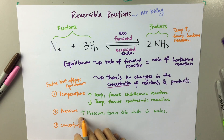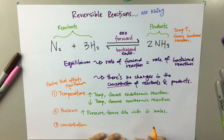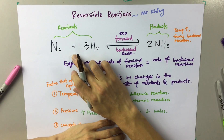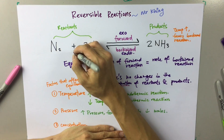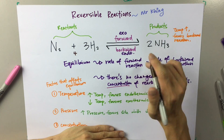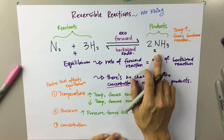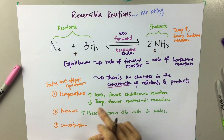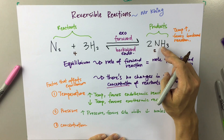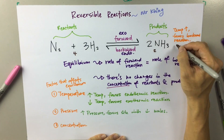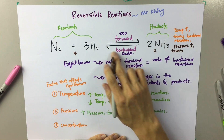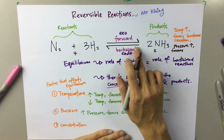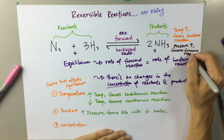What will happen if you increase the pressure? When you increase the pressure, it will favour the side with the lower number of moles. You need to calculate the number of moles on each side. On the left-hand side, the total number of moles is one plus three, which equals four. On the right-hand side, there are only two. So four on the left, two on the right — the right-hand side has the lower number of moles. When the pressure increases, it will favour the forward reaction.